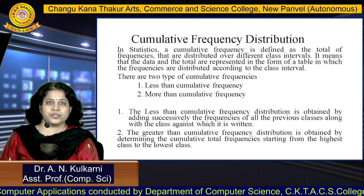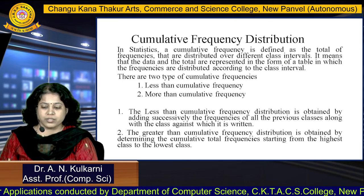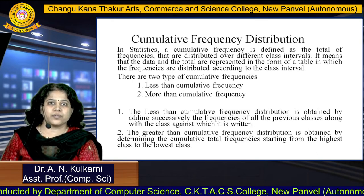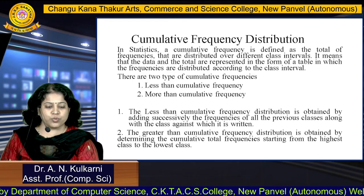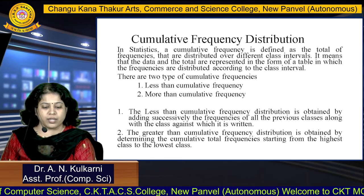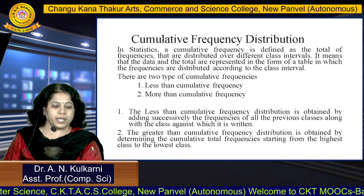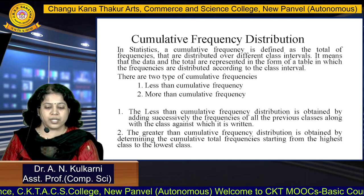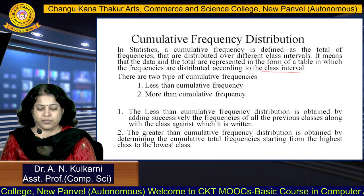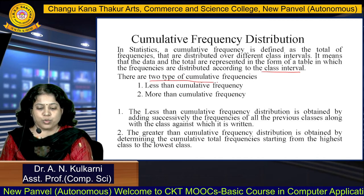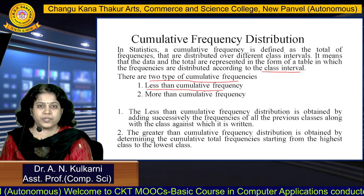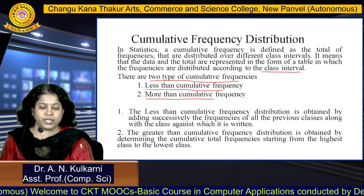Next: cumulative frequency distribution. In statistics, a cumulative frequency is defined as the total number of frequencies distributed over different class intervals, represented in a table where frequencies are distributed according to class intervals. There are two types: less than cumulative frequency and more than cumulative frequency.